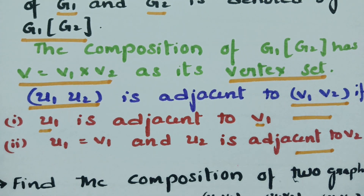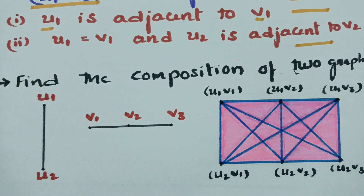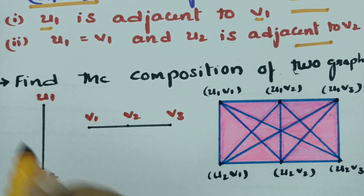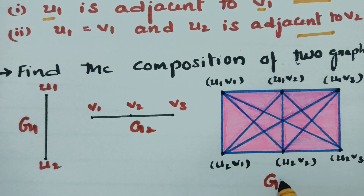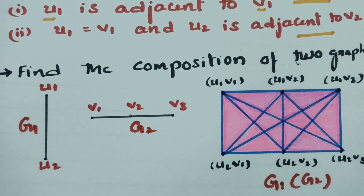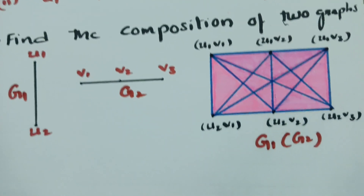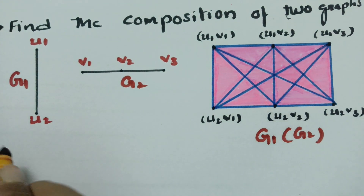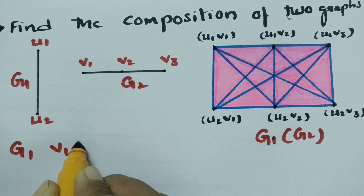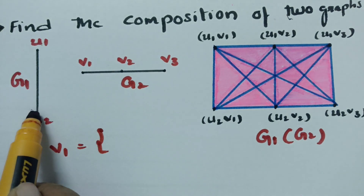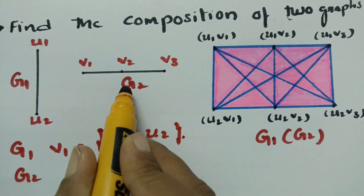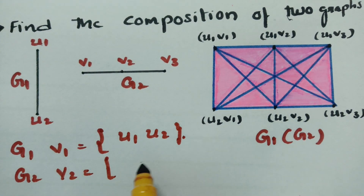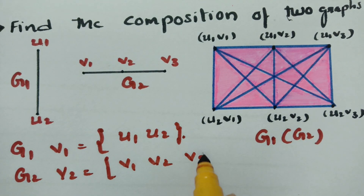Let's go with an example — find the composition of two graphs. This is graph 1 and this is graph 2, and this is the composition graph G1 of G2. In graph G1, the vertex set V1 has two vertices: U1 and U2. In the second graph, the vertex set contains three vertices: V1, V2, and V3.